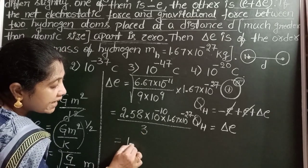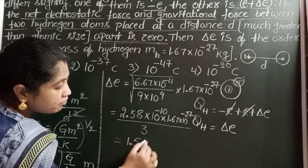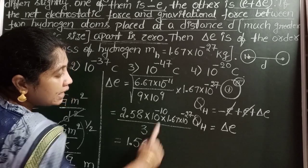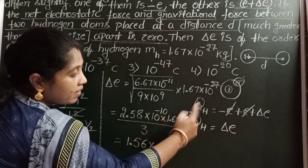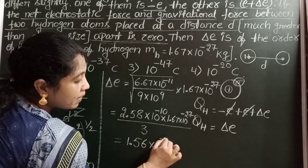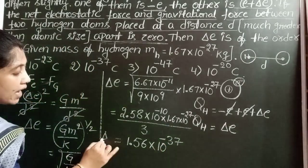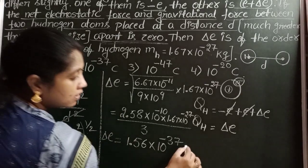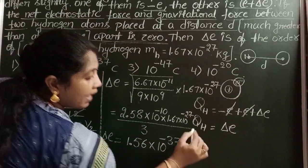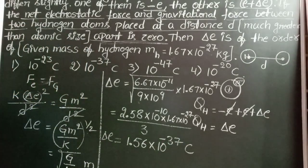Then approximately we get 1.56 into 10 power minus 10, 10 power minus 27, 10 power minus 37. So charge of hydrogen 1.56 into 10 power minus 37 Coulombs.